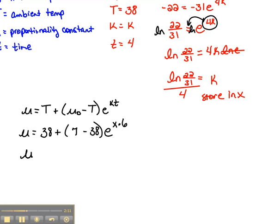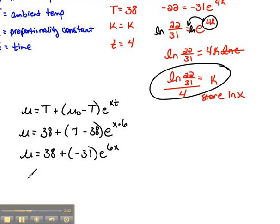So here we have our problem completely done out. Now if you'd like to clean it up just a little bit, this would be 38 plus 7 minus 38 would be negative 31 E to the 6X power. Now we can put this in our calculator as is because remember we have stored in X this value right here. So when you do that on your calculator, you should get, if we just round to the nearest whole degree, that should be 19 degrees Celsius.